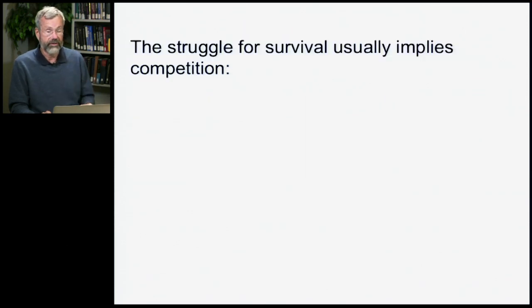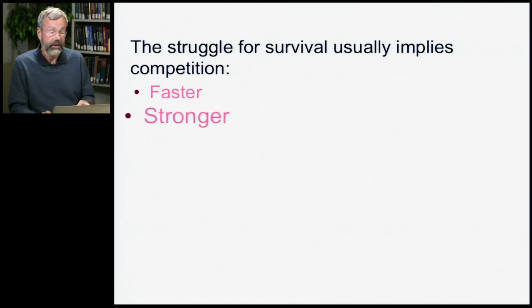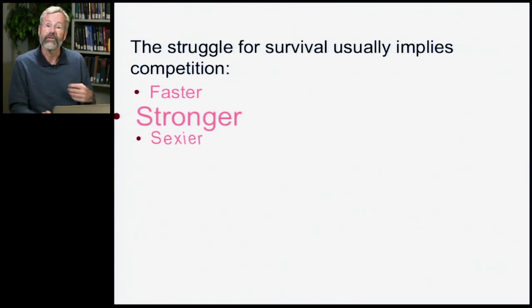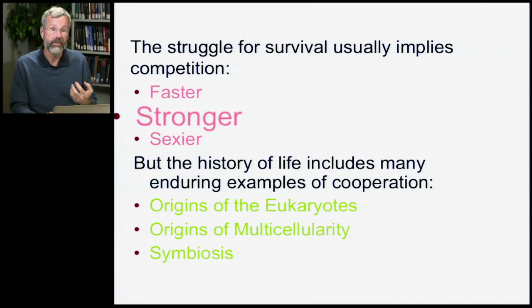The struggle for survival usually implies competition. If you're faster than the other guy, you may outrun a predator. If you're stronger, you may gain valuable resources. If you're sexier, you may get more mates. But the history of life includes many enduring examples of cooperation, which is essential for understanding the origins of the eukaryotic cell and the origins of multicellularity — all revolving around the concept of symbiosis.